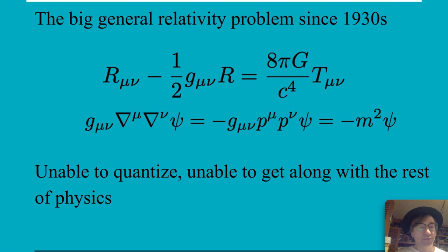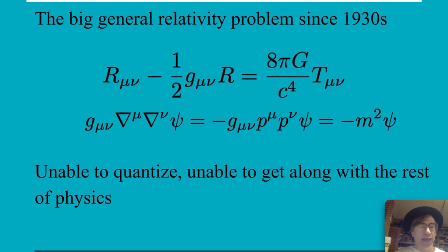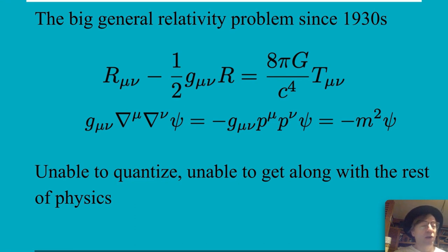And now we've got the big problem: does general relativity play nicely with the rest of physics? I wrote the Einstein field equations and the Klein-Gordon equation. We can actually quantize the Einstein field equation — it's kind of a machinery sort of thing, it can be done. The problem is that once you're done and say 'now let me do an actual calculation,' that's where the problem comes in. Einstein spent his entire second half of his life on it. Feynman gave it a try, along with a bunch of other people. Nobody got it to work out.